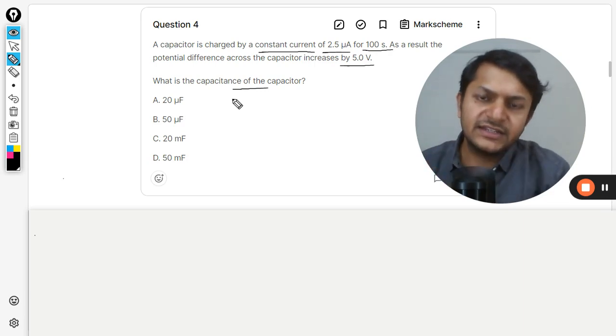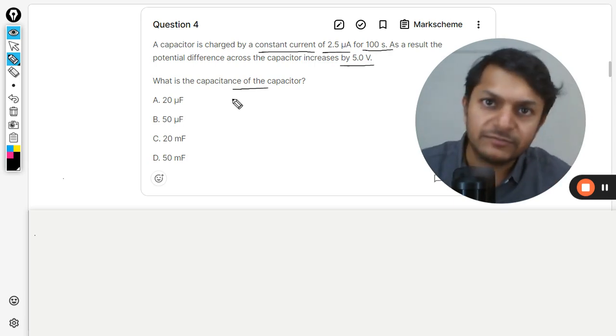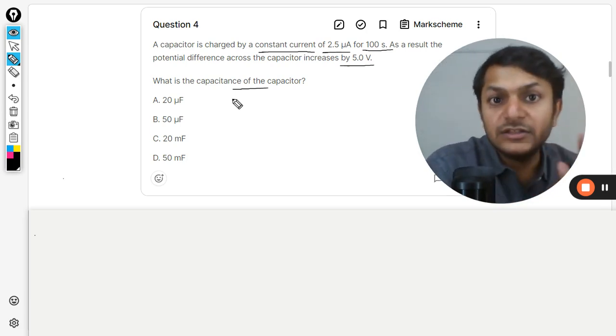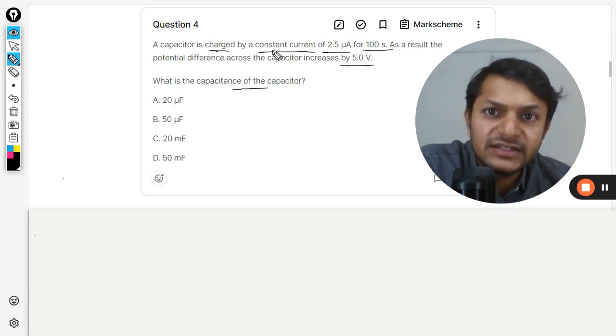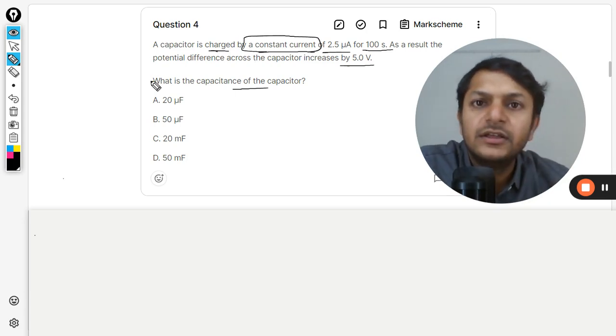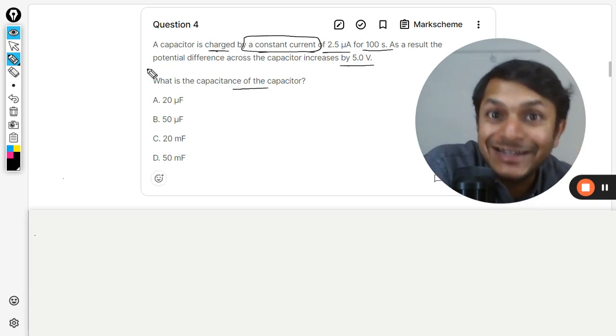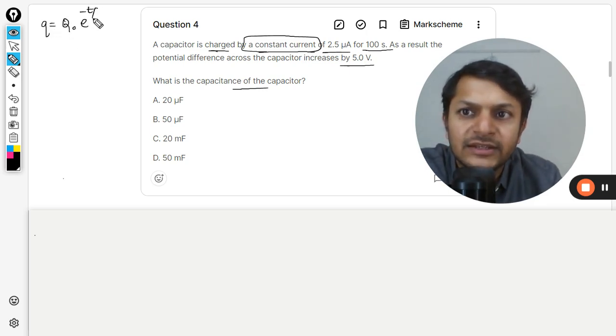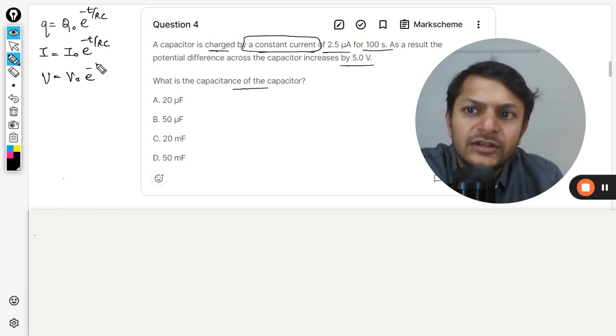There was one question I did recently where I told you that the charging of a capacitor is not given in your books. So be careful here - they say the capacitor is charged by a constant current, so there is no point of transient current. In an earlier question I told you that q can be written as q_naught e^(-t/RC), the current as i_naught e^(-t/RC), and even the voltage as v_naught e^(-t/RC).